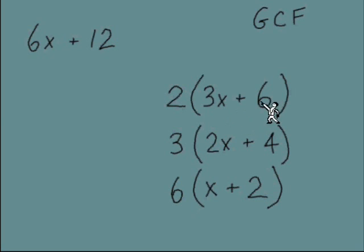You could see there's still a common factor between these two terms. Maybe we took a 2 out front as a common factor, but I can see, well, there's still a 3 that I could divide out of these two terms. And same thing with this middle example. We take out a 3, but we could still take out a 2.